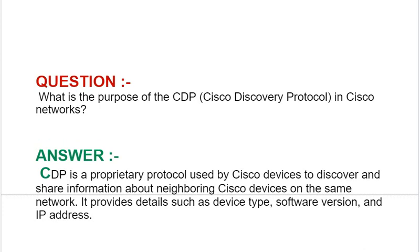Next interview question: What is the purpose of CDP, i.e., Cisco Discovery Protocol, in Cisco networks? Answer: CDP is a proprietary protocol used by Cisco devices to discover and share information about neighboring Cisco devices on the same network. It provides details such as device type, software version, and IP address.